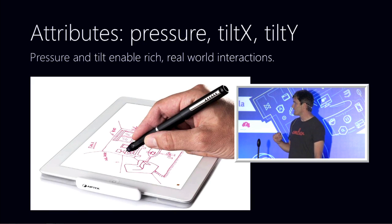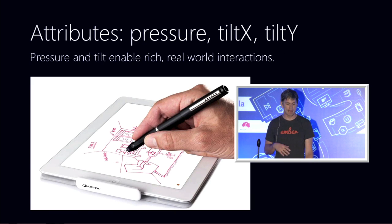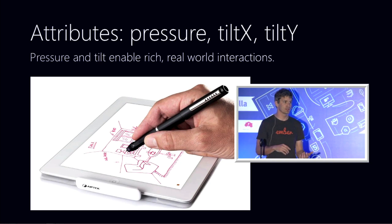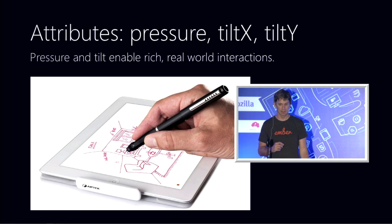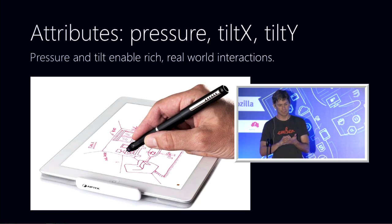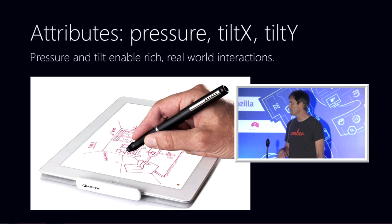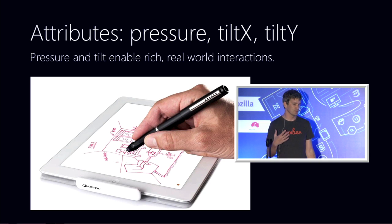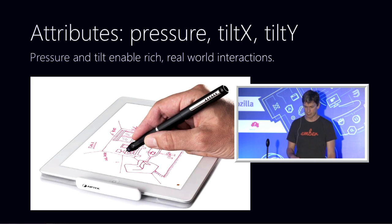Likewise, for some devices — in particular the pen — it's important to have the pressure and the tilt of the pointing device. This allows you to do calligraphy-style things with a pen and reflect what the user's real intention was with using the device.